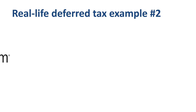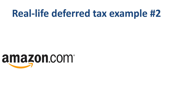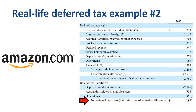Second example, Amazon. Amazon had a net deferred tax liability of $197 million at the end of 2017, as the deferred tax liabilities are higher than the deferred tax assets. Similar to Facebook, Amazon's main item in deferred tax assets is a net operating loss carry forward, and Amazon's main driver of the deferred tax liabilities is depreciation and amortization.